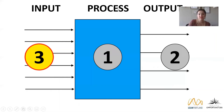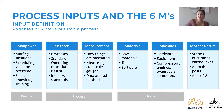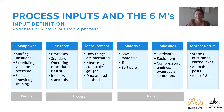Now that we've done our process and outputs, we move to our inputs. For the inputs, we're going to use the Six M's to see all those inputs or variables that cause our outputs to go up or down. Today, using more politically correct terms, manpower should be 'people' and Mother Nature should be 'environment.' However, the Six M's is easy to remember, so we'll use that today.